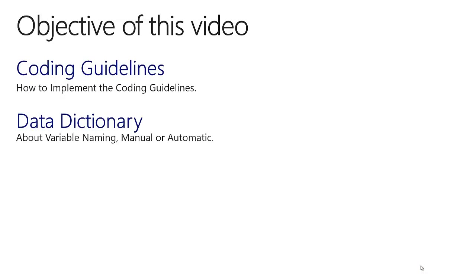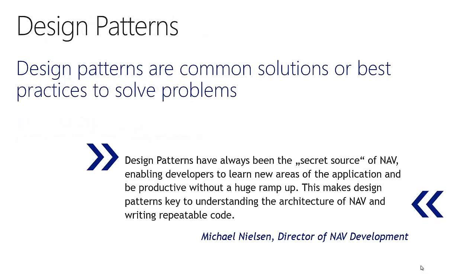At the end of this video you will have an idea on how to implement the CAL coding guidelines in Microsoft Dynamics NAV. The objective is to go through the coding guidelines and talk about the elements one by one, and at the end we will go through the data dictionary about variable naming. Design patterns are common solutions or best practices to solve problems — a well-known concept in computer programming that can be applied to Dynamics NAV as well.